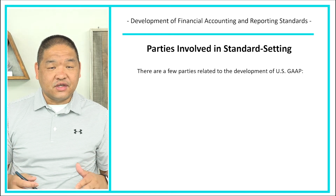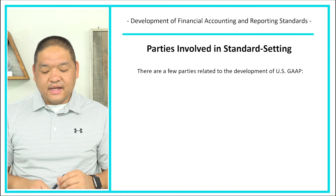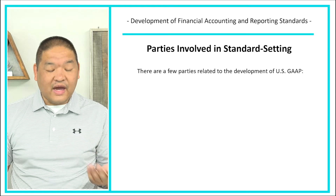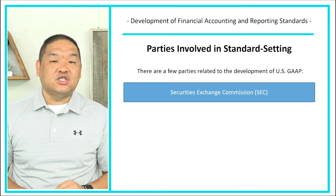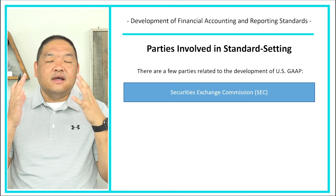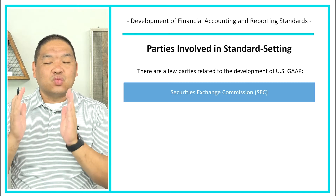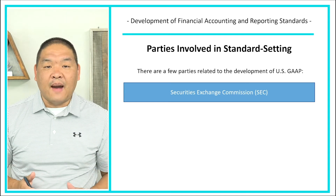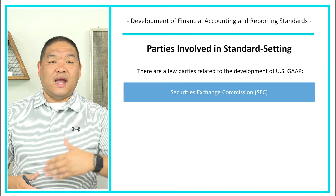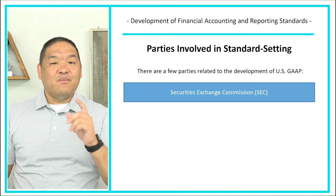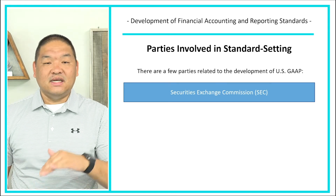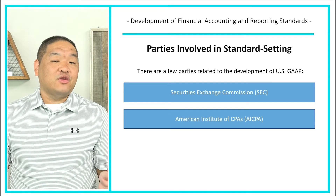When we talk about parties related to standard setting, the first is the Securities and Exchange Commission. For public companies, the SEC has regulatory authority over U.S. GAAP. So essentially, it's the SEC's job to oversee GAAP — but only for public companies. The SEC does not oversee private companies.